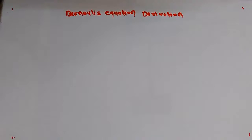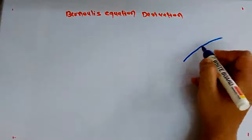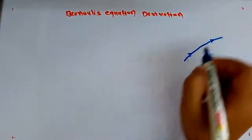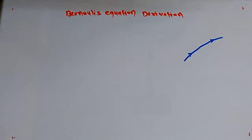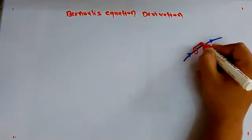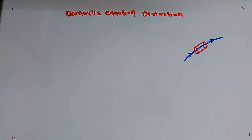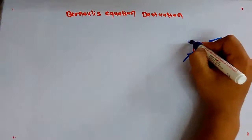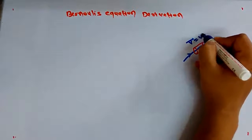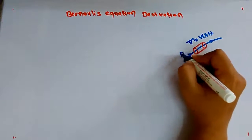Hello, today we will see how to derive the Bernoulli equation. First of all, we are considering a fluid flowing along a streamline. We will take a fluid element flowing along a streamline having a velocity vector which is a function of space and time.